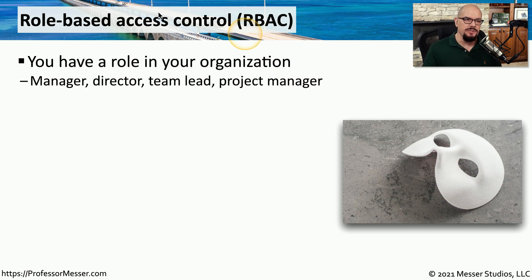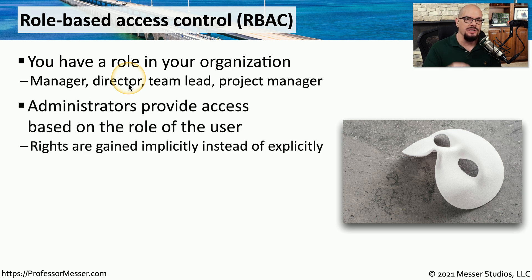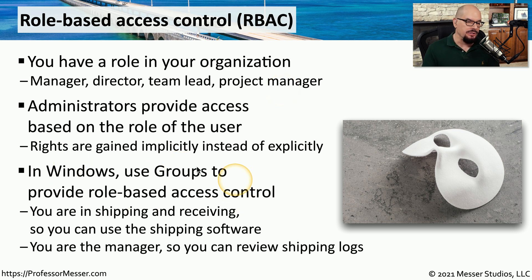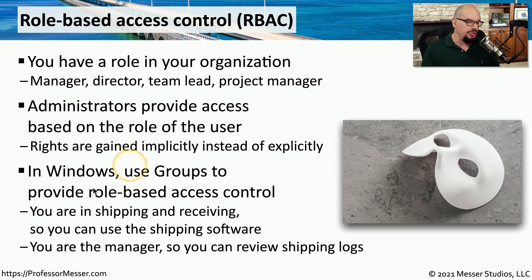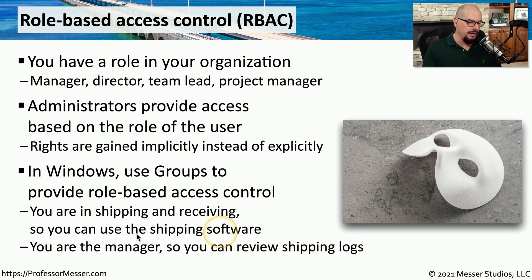One way to provide least privilege in an operating system is through role-based access control, or RBAC. This is usually associated with your particular job role — you might be a manager, a director, a vice president, or a project manager, and particular rights and permissions are assigned based on that role. In many operating systems, you can implement RBAC through the use of groups. For example, if you work in shipping and receiving, you might be added to the shipping and receiving group, giving you rights to use the shipping software and perform daily job functions. If you're the manager of that team, you might be placed in a manager's group with access to review logs and create reports. This provides a clear separation — people doing shipping and receiving wouldn't have access to the reports; you'd have to be in the manager's group to have that role-based access control.